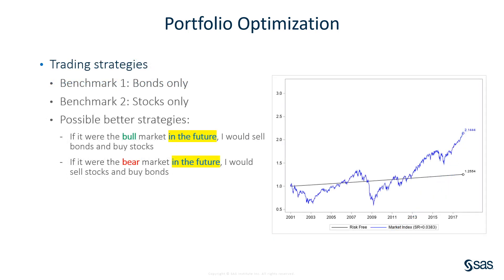The trading strategies can be very complex, so let's start with simple benchmark strategies. You can hold only bonds the whole time — that's a risk-free strategy. Or you can hold only stocks the whole time — that's a market strategy. These two benchmark strategies are model-free, so we can directly draw the wealth curve. Assume that at the beginning of 2001 you have $1. If you hold bonds the whole time, 17 years later you will end up with $1.25 — your wealth increases 25%. The market strategy seems the winner. Most of the time, you are trying to find a strategy that beats the market strategy.